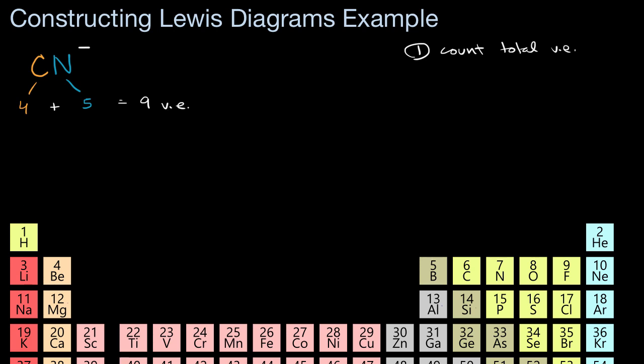But we are not done yet because this is not a neutral molecule. We have a negative charge here - it is an anion with a negative one charge. And so because of that negative one, we can think about it having an extra valence electron. So we're dealing with a total of 10 valence electrons.